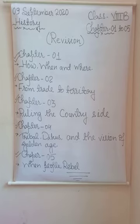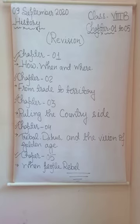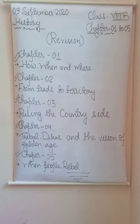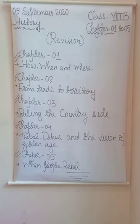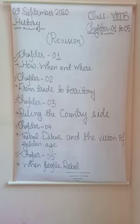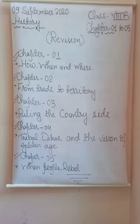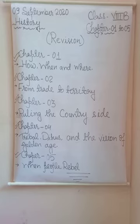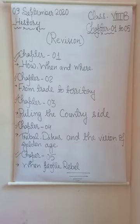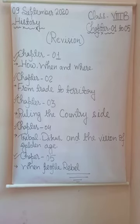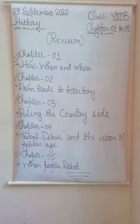The East India Company bought goods at a cheap price and sold them at higher prices in Europe. Cotton and silk produced in India had a big market in Europe, as well as pepper, cloves, cardamom and cinnamon, which were in great demand. The English East India Company had to compete with other European companies such as French, Dutch and Portuguese. Because of their powerful naval force, the British won over other European powers and became the superpower in the struggle for monopoly of trade with India.